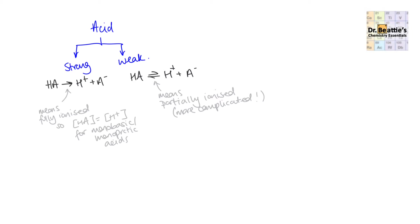In the previous video on strong acid calculations, we made a distinction between the two different strengths of acids. We have strong acids designated with HA, where A is the rest of the acid, and that fully ionizes into H⁺ and A⁻ when in solution. Whatever the concentration of the strong acid you put in, you get exactly the same concentration of H⁺ ions if the acid is monobasic or monoprotic. Two examples are hydrochloric acid and nitric acid.